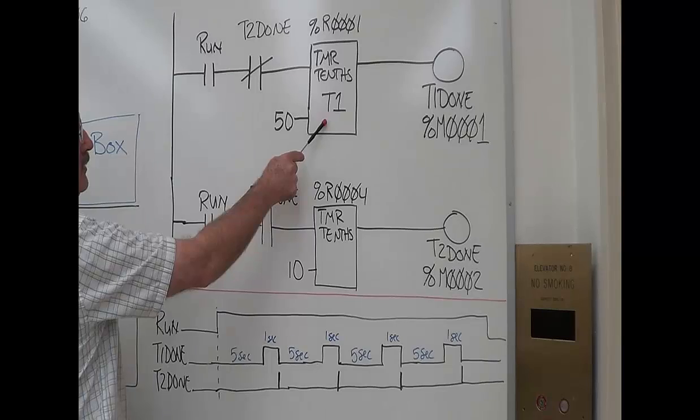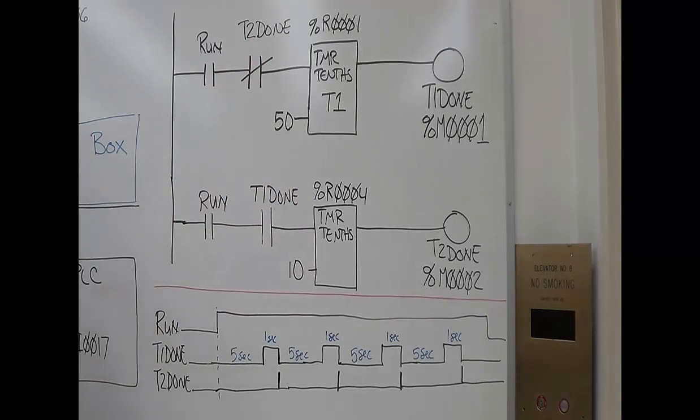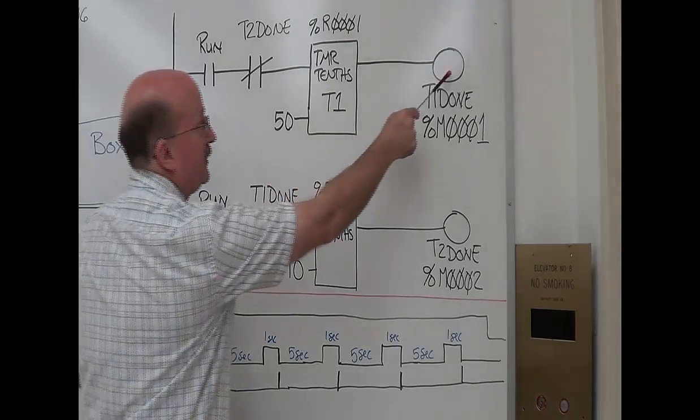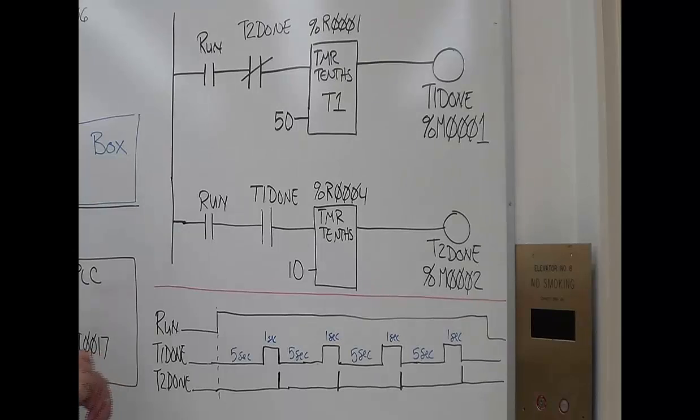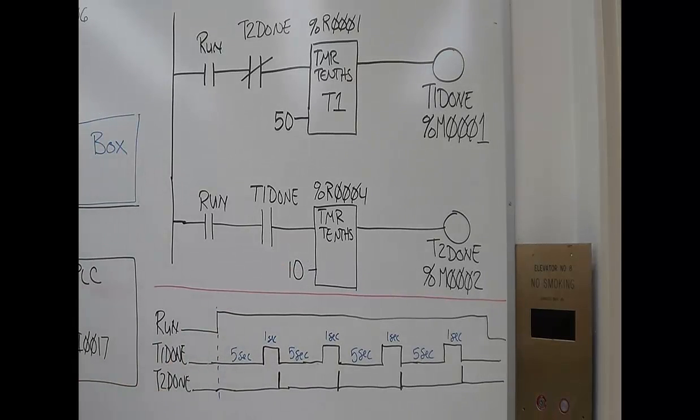And this timer will continue to run as long as timer 2 done is not completed. When it finishes, it will turn on its coil, timer 1 done. Now when timer 1 done turns on, timer 2 starts timing.